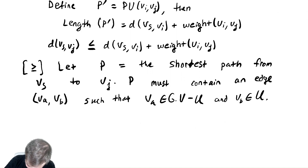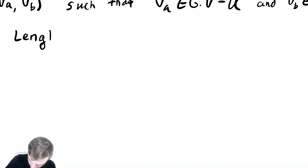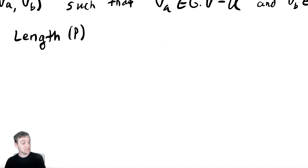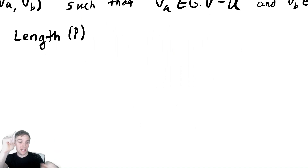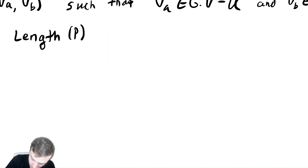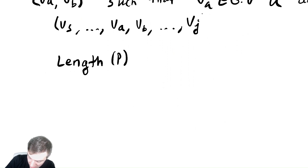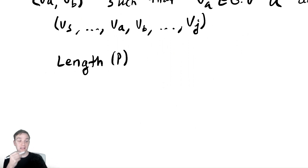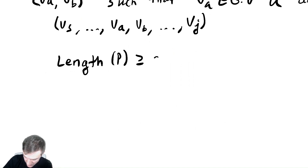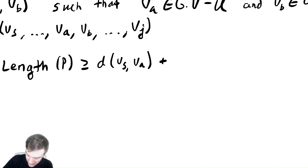Now we do some bounding. The length of P must be at least as big as however long it takes to get to VA plus the weight from VA to VB. This path connects Vs to VA at some point, then VA to VB, then VB to Vj. So the path looks like: Vs, a bunch of stuff, then VA, then VB, then a bunch of stuff, then Vj. If we truncate this path at VB, that gives a lower bound on the length. So the length of P is greater than or equal to the distance from Vs to VA plus the weight of VA VB.